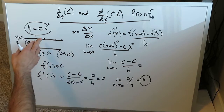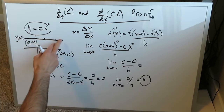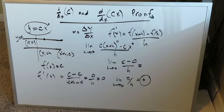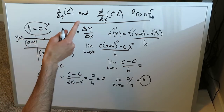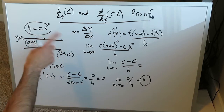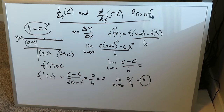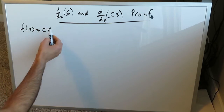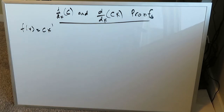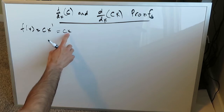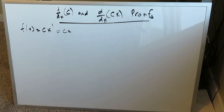In the remainder of this video we look at the second case. We're proving the derivative of f(x) = cx, where x has an exponent of 1 — you don't need to write cx to the 1, just cx. If someone asks you to find the derivative of this, you know the x disappears and the c is retained. We want to know why that is the case.